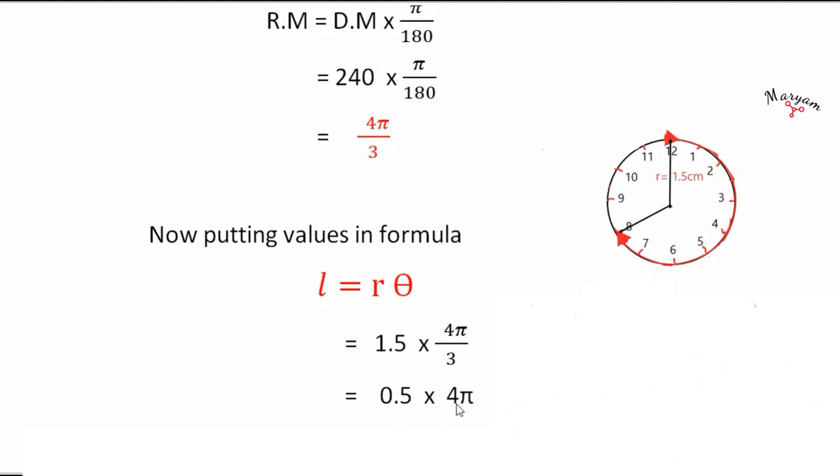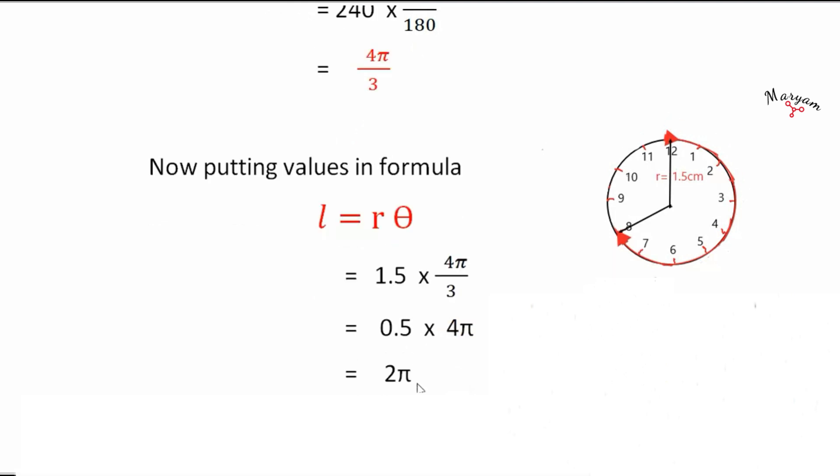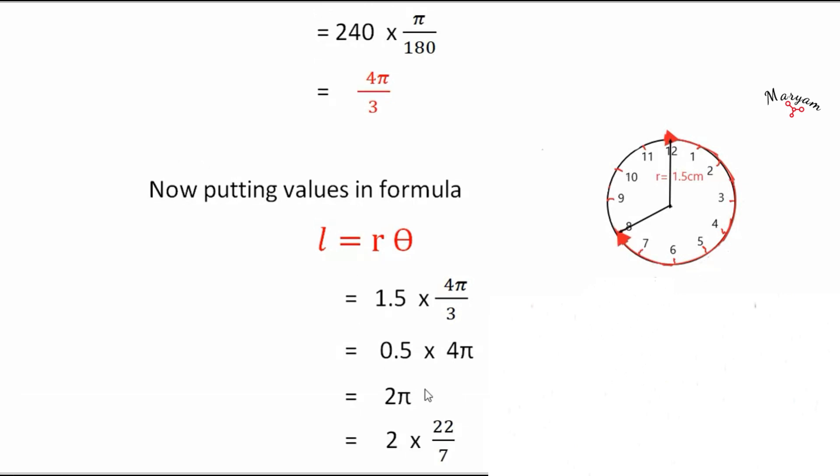So r is 1.5 and theta is 4 pi by 3. Then 3 and 1.5 cancels which gives you 0.5 into 4 pi. So 4 into 0.5 is 2 pi, and the value of pi here is 22 by 7. Why? Because we are finding the length of arc here, and length of arc will always be in numbers. The length of arc doesn't have the pi terms, that's why we take pi equals 22 by 7.